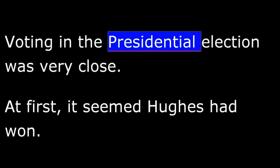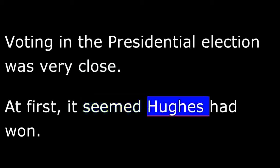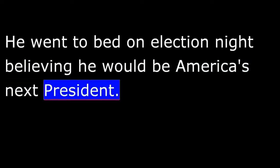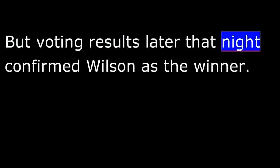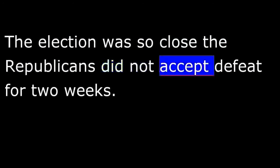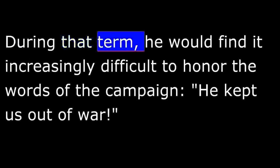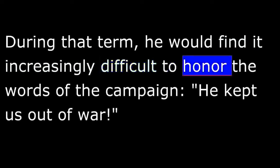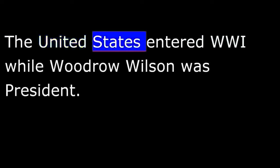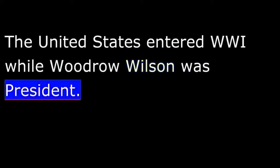Voting in the presidential election was very close. At first, it seemed Hughes had won, and he went to bed on election night believing he would be America's next president. But voting results later that night confirmed Wilson as the winner. The election was so close that the Republicans did not accept defeat for two weeks. Woodrow Wilson had won another term. During that term, he would find it increasingly difficult to honor the campaign words "He kept us out of war" — and finally, he would find it impossible. The United States entered World War I while Woodrow Wilson was president. That will be our story next week.